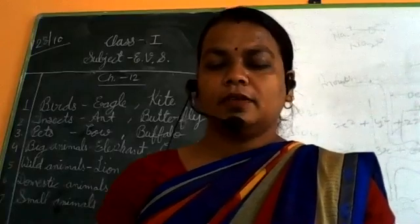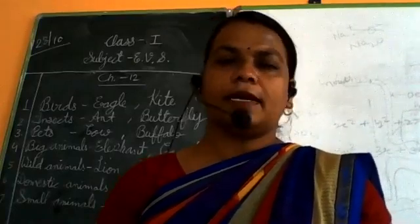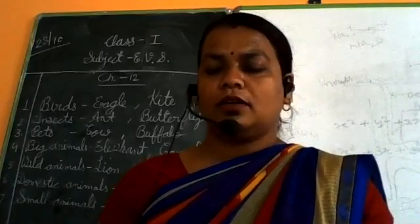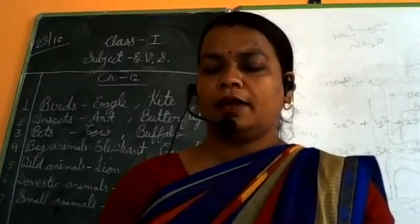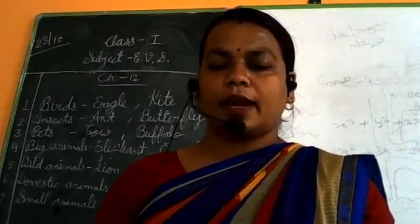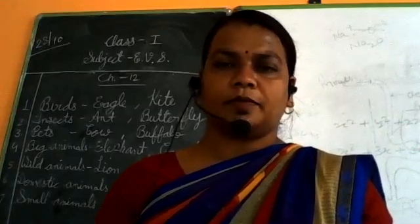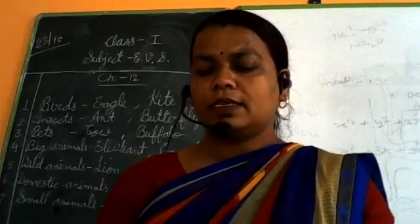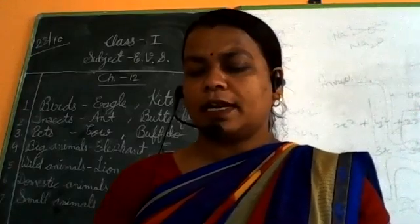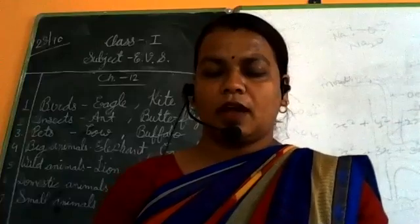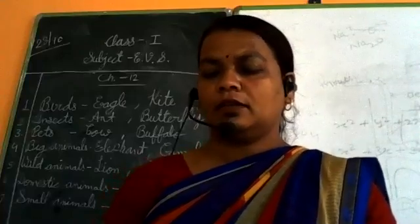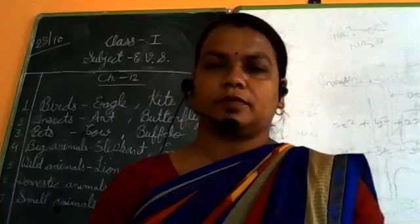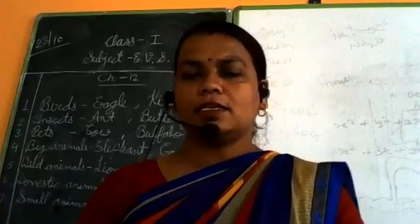Next, which of these is a wild animal? Dog, lion, hen, and cat. Correct answer: lion. Next, which of these can be domesticated? Lion, tiger, cow, and python. Correct answer is cow.